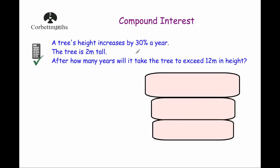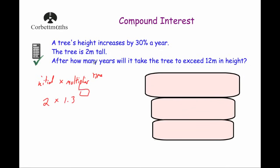The last question: a tree's height increases by 30% a year. The tree is 2 metres tall. After how many years will the tree exceed 12 metres in height? Using the formula: initial is 2 metres, multiplier is 1.30 (a 30% increase), and we need to find the unknown time — so we'll try different values of time to find when the height exceeds 12 metres.